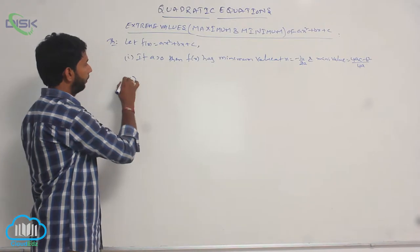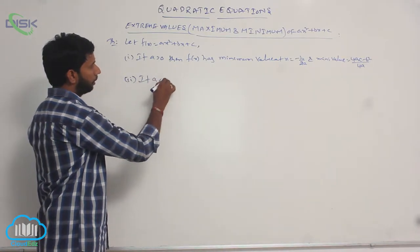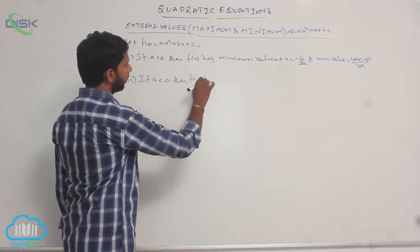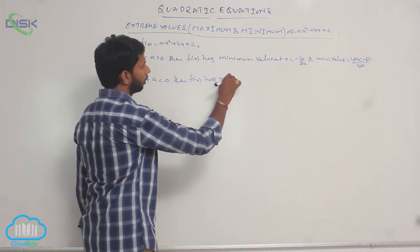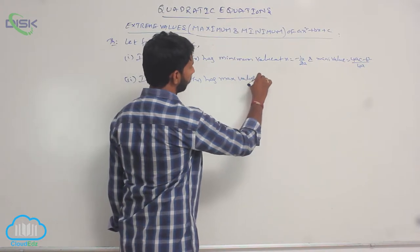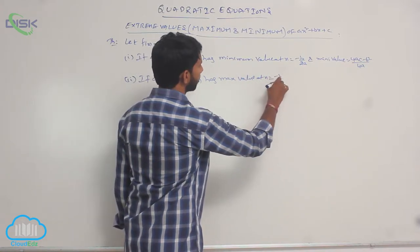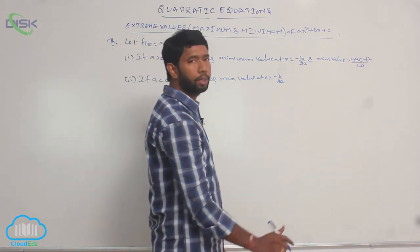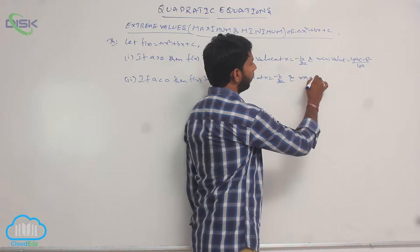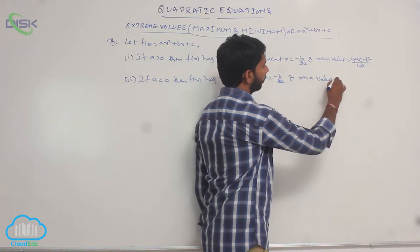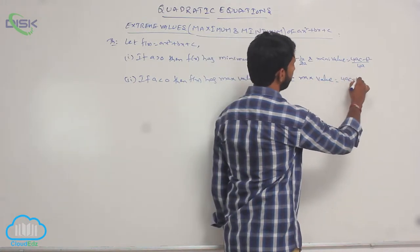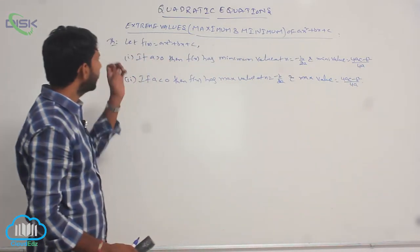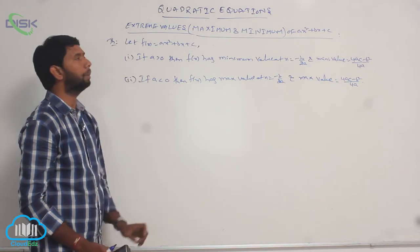If a is less than 0, then f(x) has a maximum value at x equal to minus b by 2a, and maximum value is equal to 4ac minus b² by 4a. Here, extreme values means maxima and minimum values.